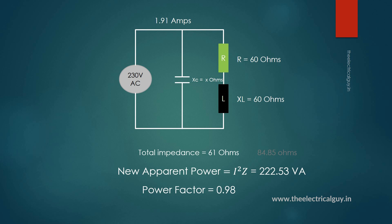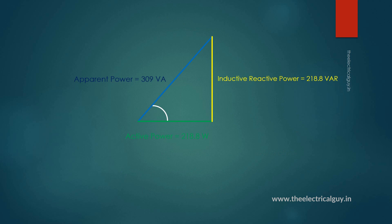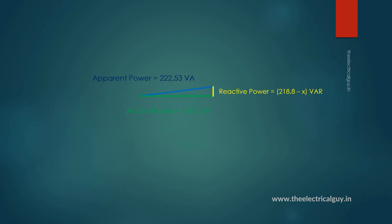So let's understand what has happened here. The power triangle shows the different types of power in the circuit without a capacitor. Here we can see the inductive reactive power is 218.8 VAR. So to improve the power factor of the circuit, we added a capacitor. The reactive power from the capacitor — let's call it X VAR — cancels out with the inductive reactive power, and the resultant power triangle shows that 218.8 VAR minus X VAR of reactive power now remains in the circuit, which has caused the improvement in power factor.